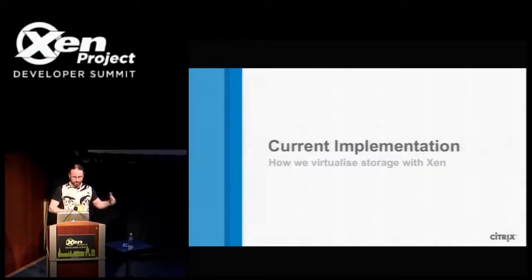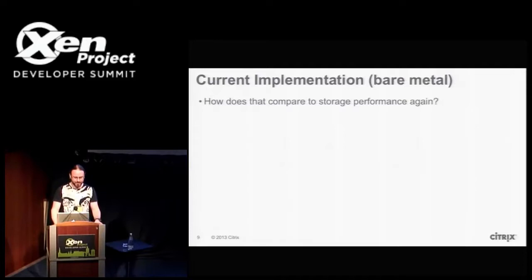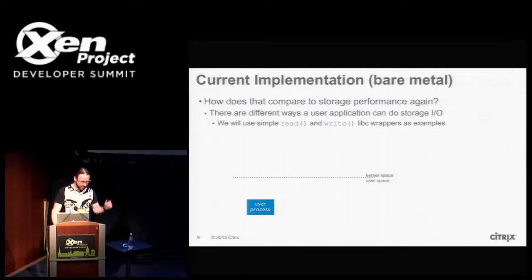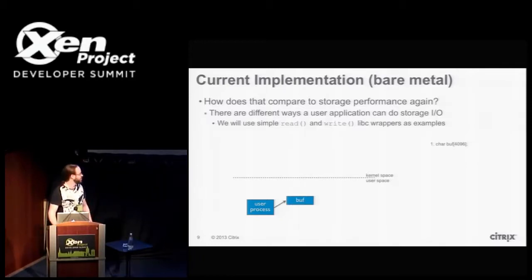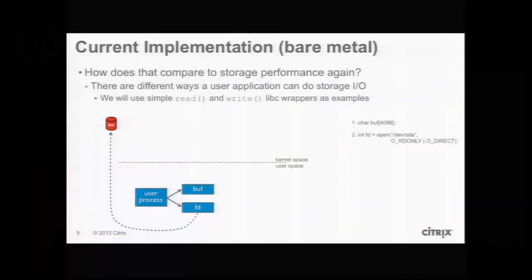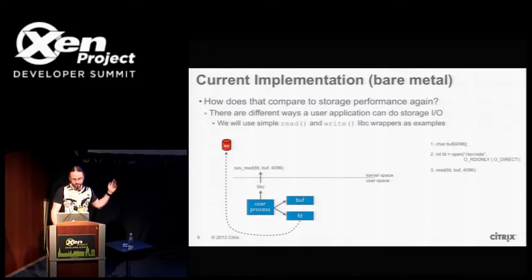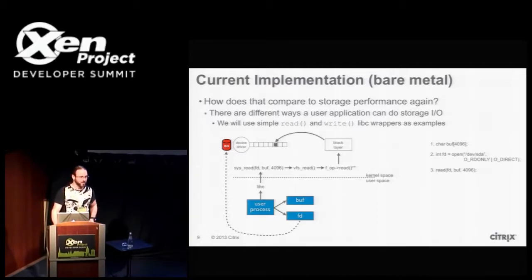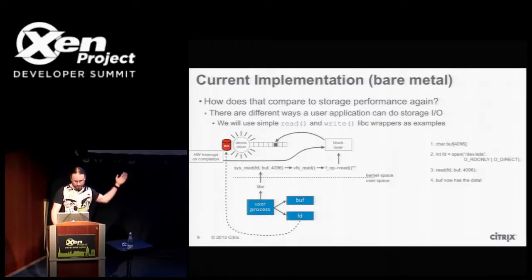Let me go over very quickly how a storage request traverses the virtualization stack and then discuss some of my measurements. There are many different ways a user application can do I/O. A very simple one is through read and write. If you have a user process with a buffer and a file descriptor opened with O_DIRECT — so it bypasses any caching — and you do some read, that's going to go into a syscall handler, bounce around the kernel a bit, and end up in the block layer.